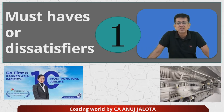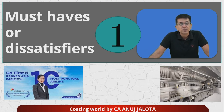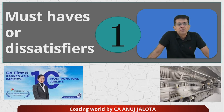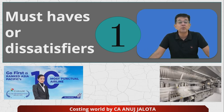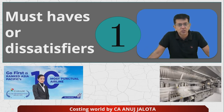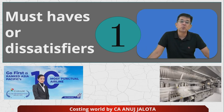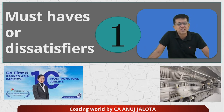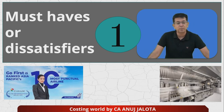The first are Must-Haves or Dissatisfiers. These are basic necessities — if they are not there, the customer will be dissatisfied and may not buy your product. For example, punctuality of airlines: I would not fly an airline that is always late. Similarly, a fine dining restaurant must have a clean kitchen. If these things are not there, it dissatisfies the consumer.